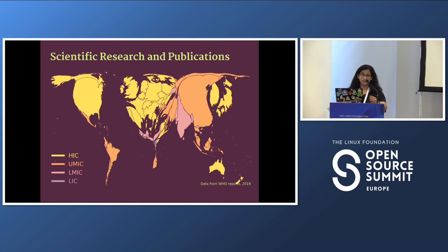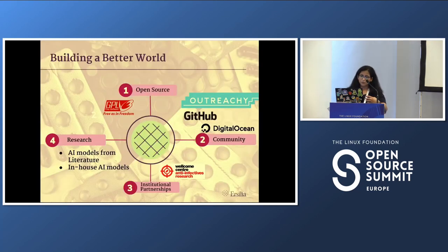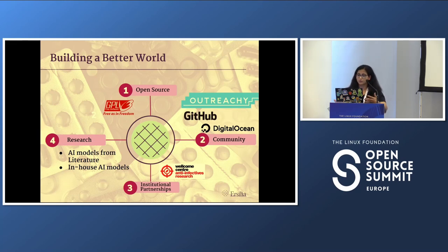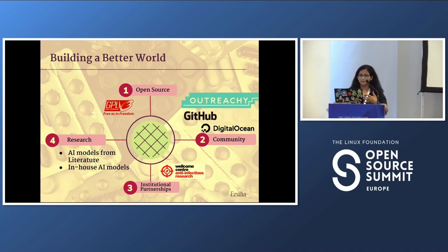So what is the solution, and how are we doing our bit to make this world a better place? At Urcilia, we are a UK- and Spain-based non-profit building low- or no-code tools to facilitate early-stage drug discovery research for low-resource settings. All of our software is completely open-source, licensed under GPL3. We're entirely volunteer-driven, including academic and industry volunteers such as GitHub, which helped us automate a large part of our workflows, and DigitalOcean, which has provided us infrastructure.